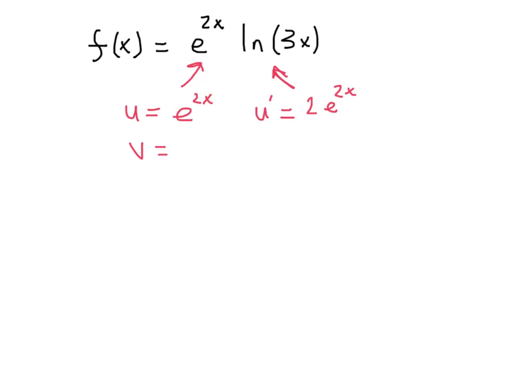Our v is natural log of 3x. We know that the derivative of that is 1 over x. We just spent a whole screen preaching at you about that. Be careful with that.